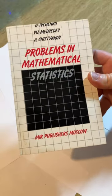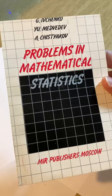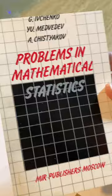Here we have a rare book on statistics. It's called Problems in Mathematical Statistics by Ivchenko, Medvedev, and Kistiakov. It was published by Mir Publishers Moscow. And it's a book on problems in mathematical statistics, as the name implies.